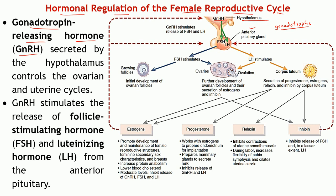GnRH — gonadotropin releasing hormone — stimulates the release of hormones by the gonadotropes. Gonadotropes produce two types of hormones: FSH (follicle stimulating hormone) and LH (luteinizing hormone). Collectively both these hormones are known as gonadotropins. So GnRH acts on the gonadotropes to increase the release of both FSH and LH.